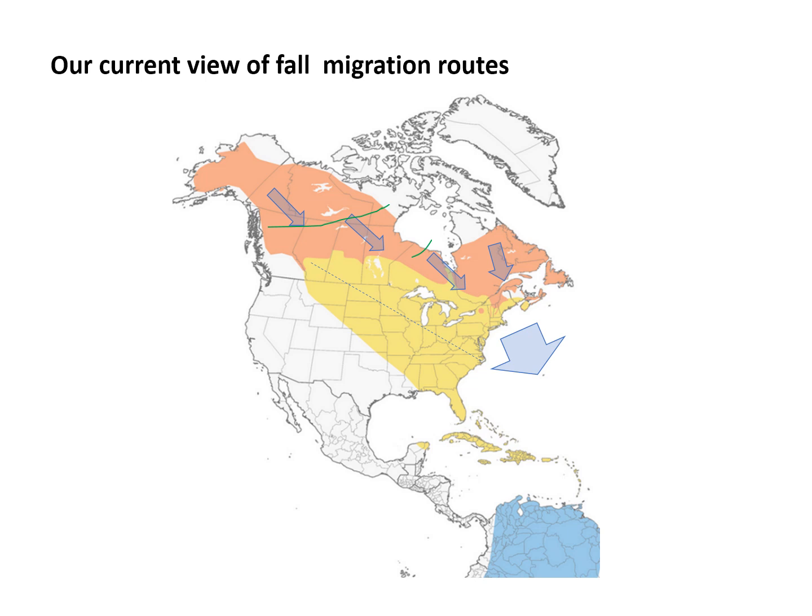Instead, the birds are going strongly east-southeast to the north Atlantic coast. Birds from the west hit the coast a little further south than birds coming from the east, but they all mix together once they're east of the Great Lakes and then take off on over-ocean flights.